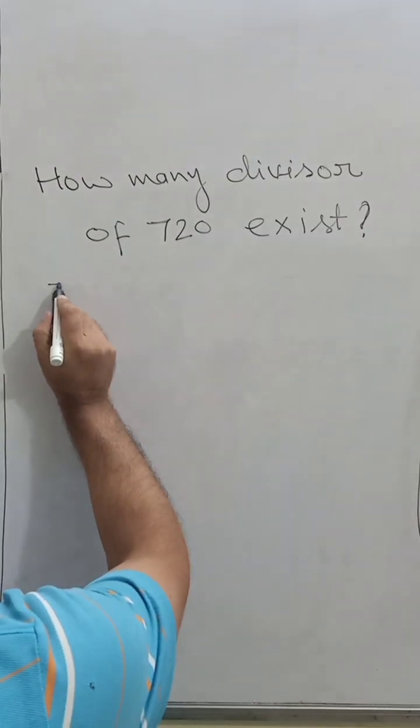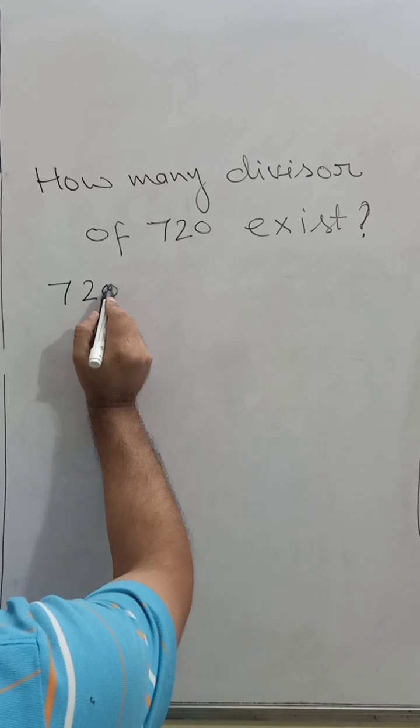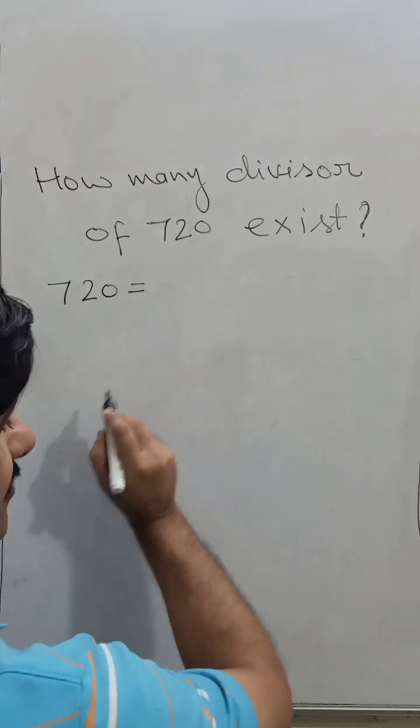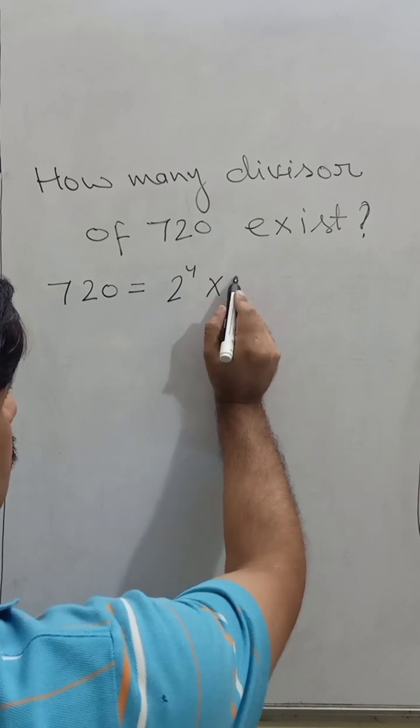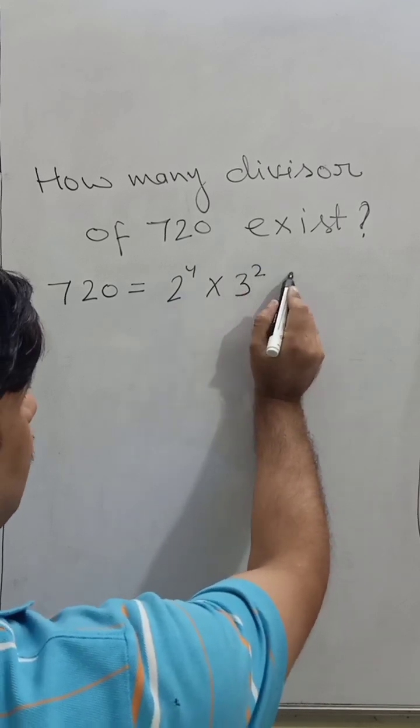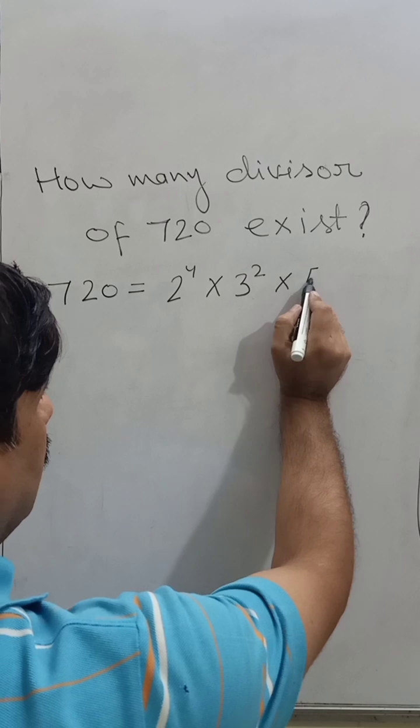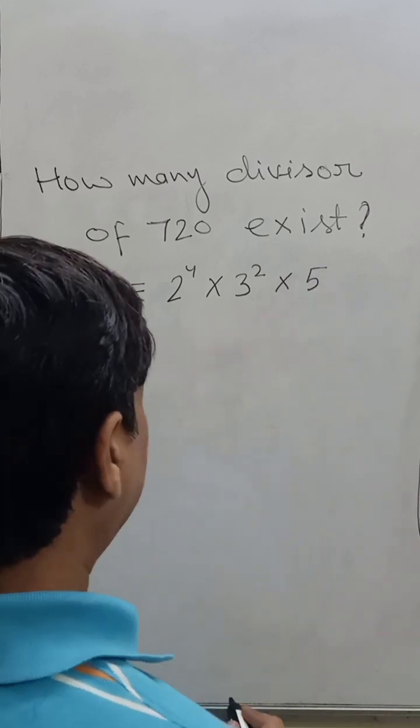First we factor 720, and it is 2 to the power 4, 3 squared, and 5. This is the prime factorization.